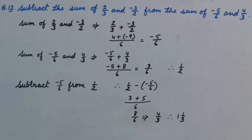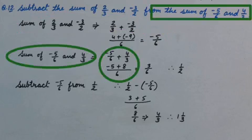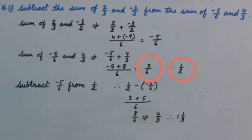Then we will solve the sum of minus 5 upon 6 and 4 upon 3. That is 3 upon 6. It is reducible, so we can write it 1 upon 2.